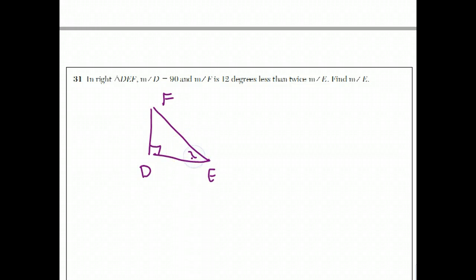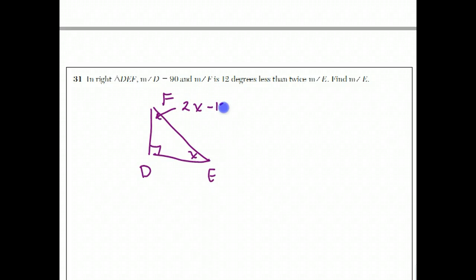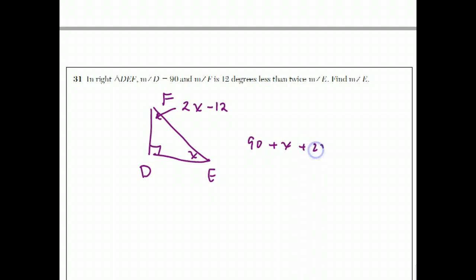I'll put X for angle E. For angle F, it's 12 degrees less than twice angle E. Twice angle E is 2X, so 12 degrees less than twice angle E is 2X minus 12. The fact is that the three angles of a triangle have to add up to 180, so we get this equation.